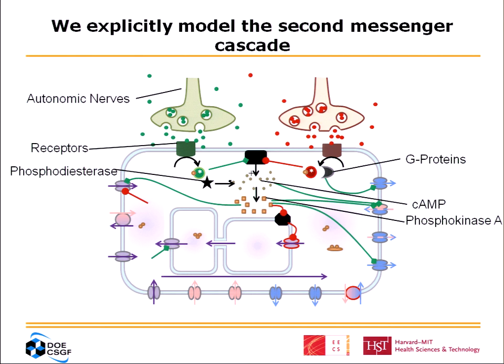The way that we modeled this is different from the way it's been done because of our focus on mechanisms. Because we went down to such a low level, actually defining each component, we're able to use explicit measurements of various parameters. You end up with a system that has a large number of parameters, but you have a fairly high degree of confidence about the value of each parameter because they've been experimentally measured.